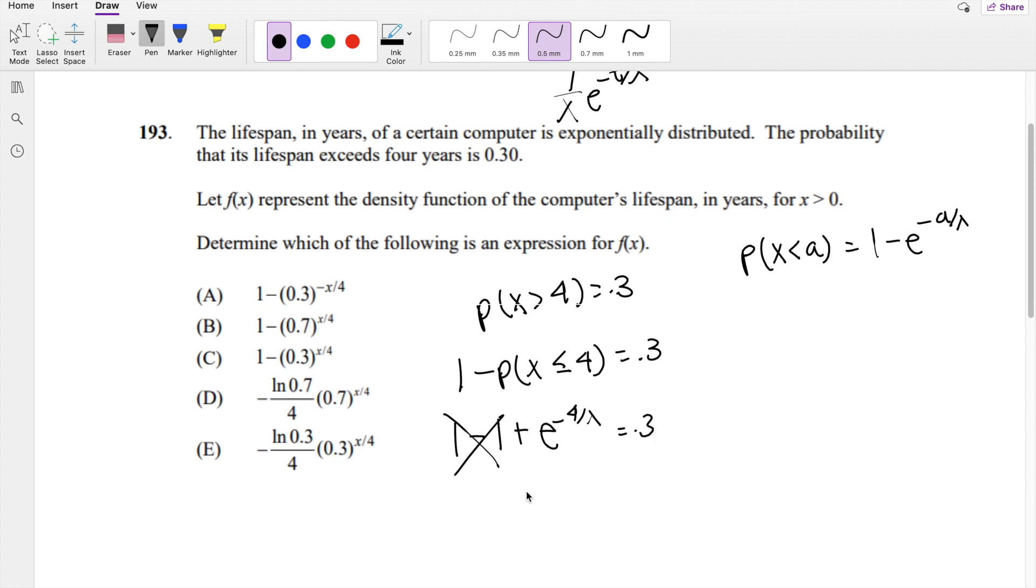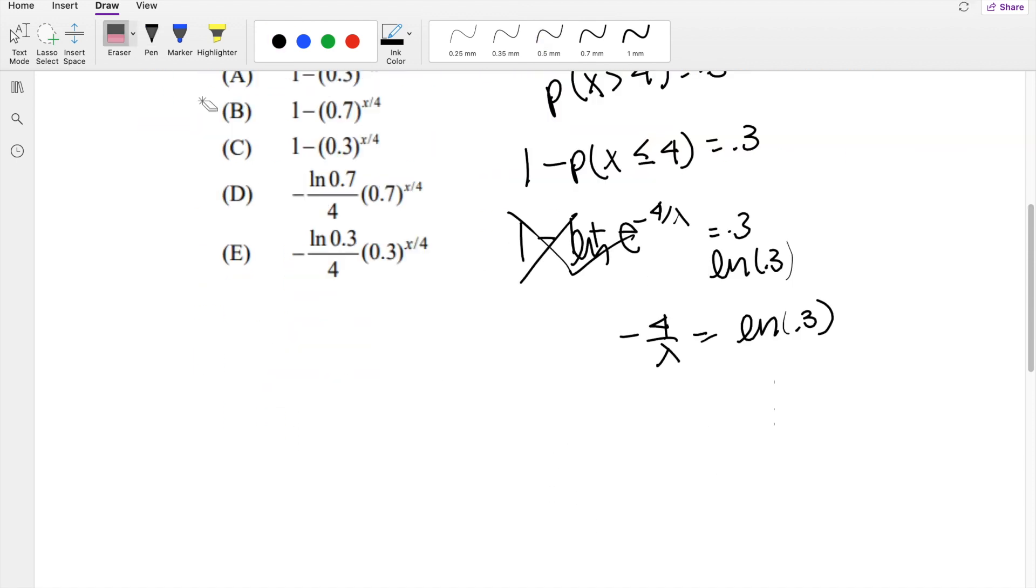So I can take the natural log of both sides. Natural log to cancel out. So you get negative 4 over lambda is equal to natural log of 0.3. Then solving for lambda, we get lambda is equal to negative 4 over natural log of 0.3.